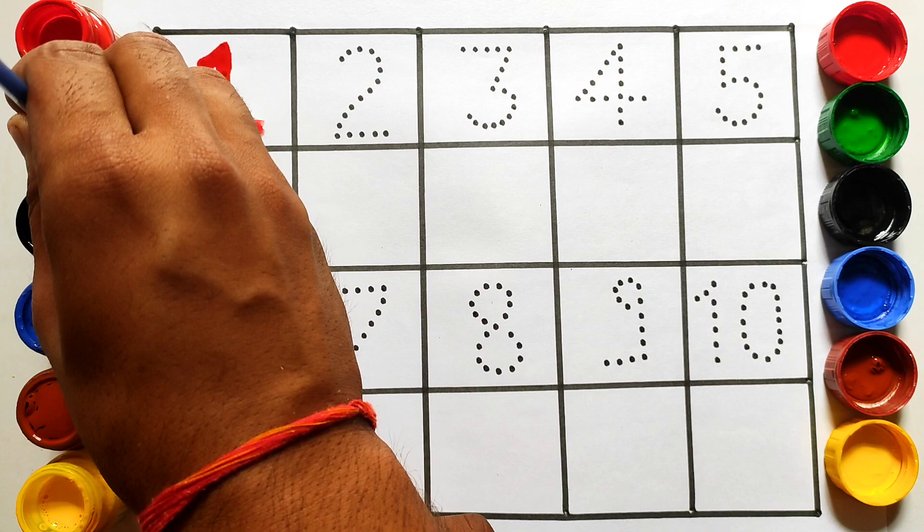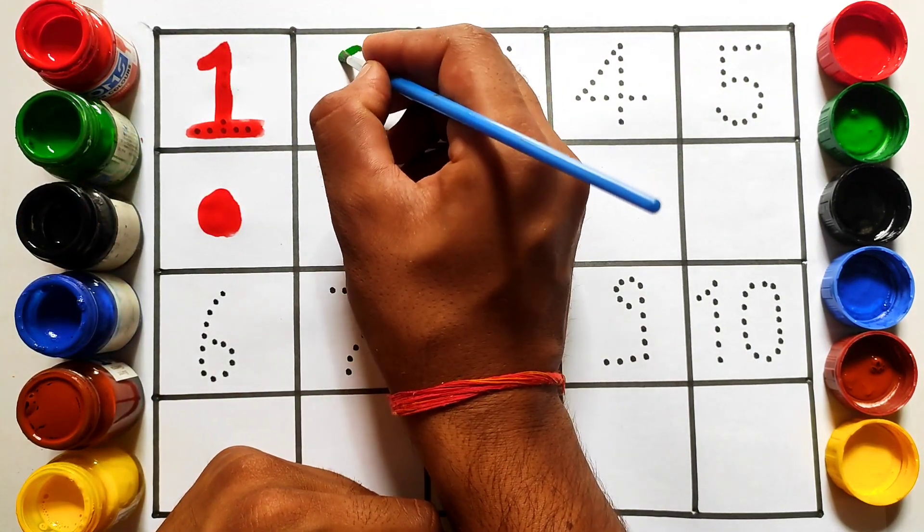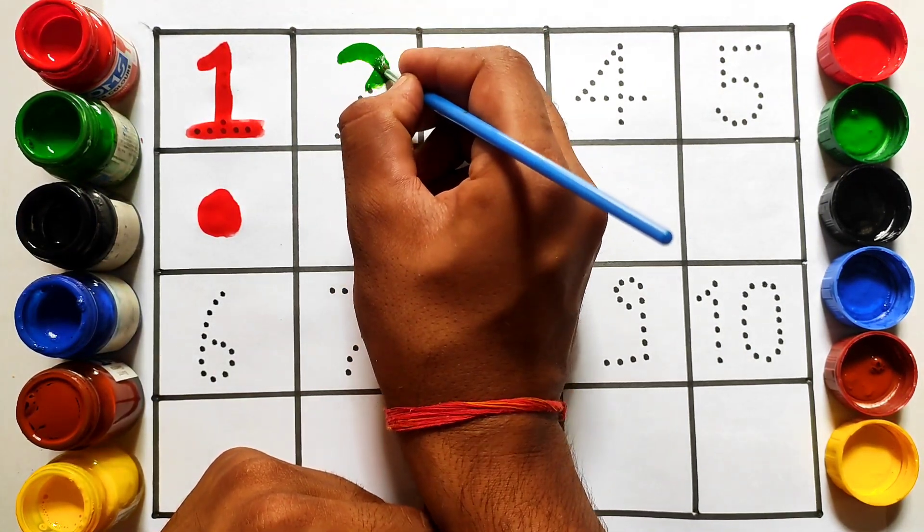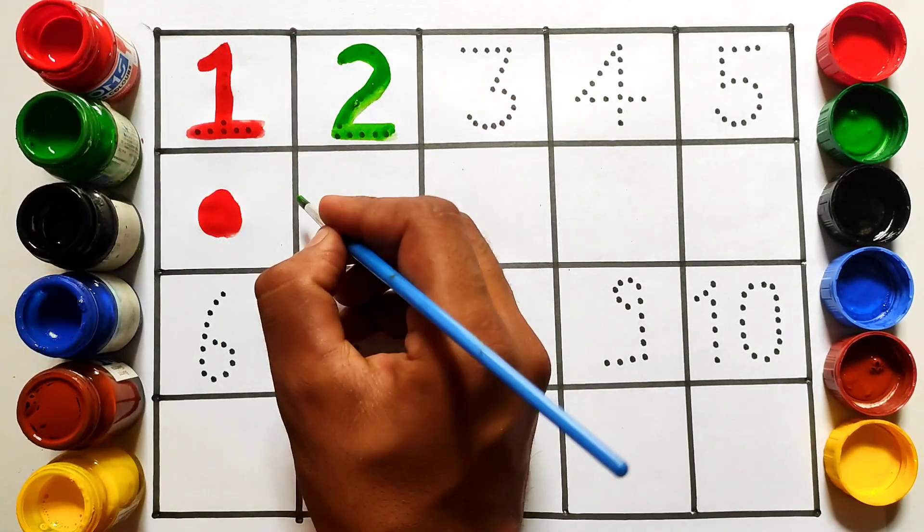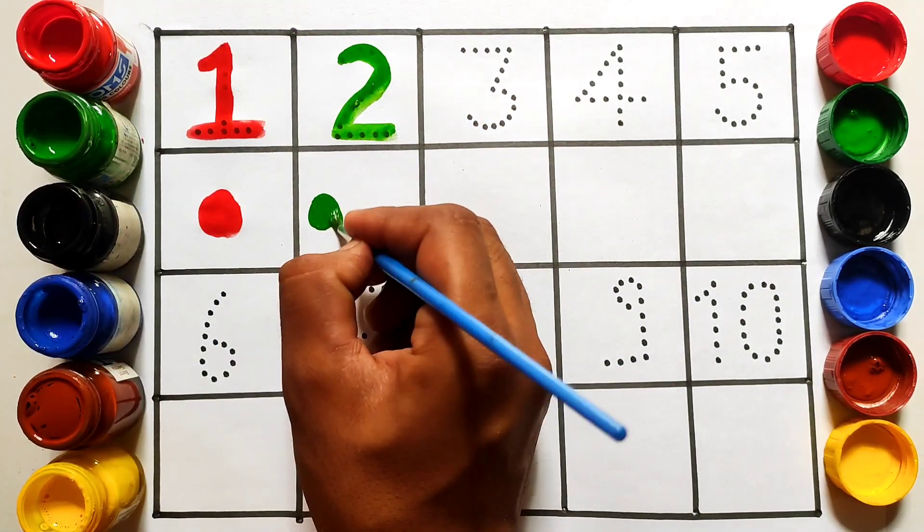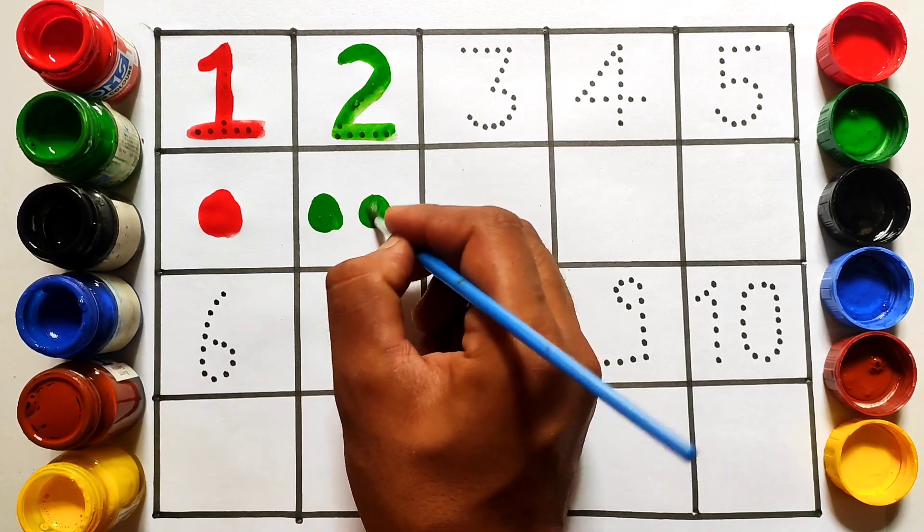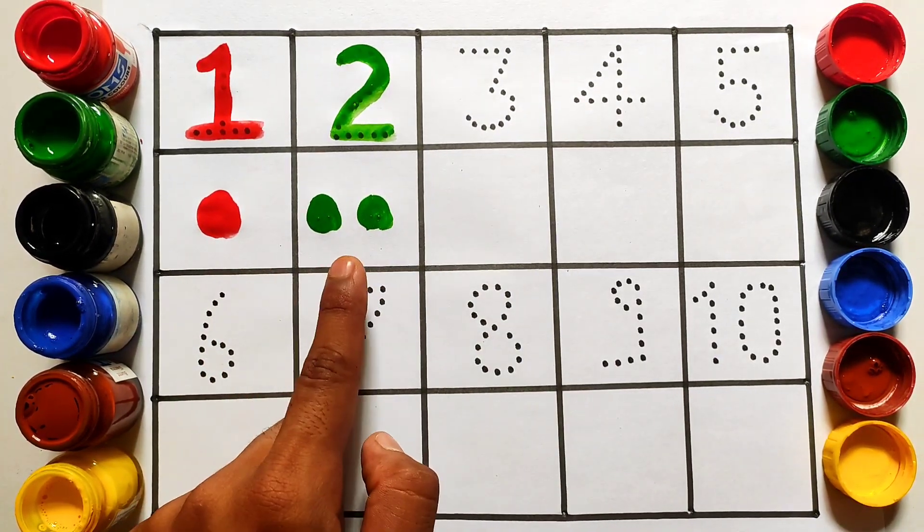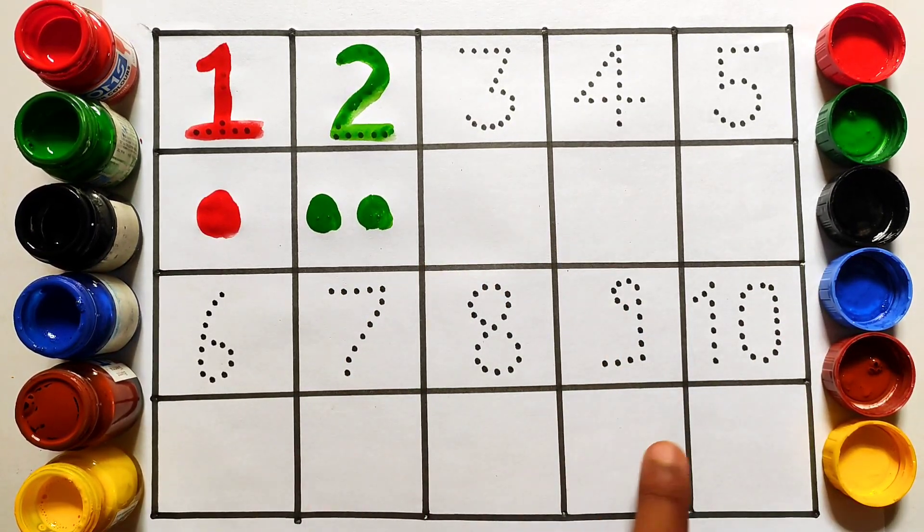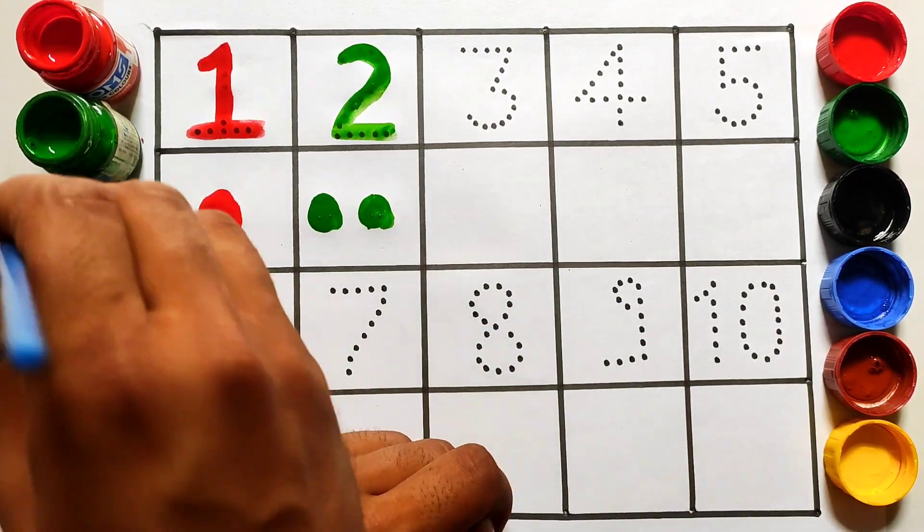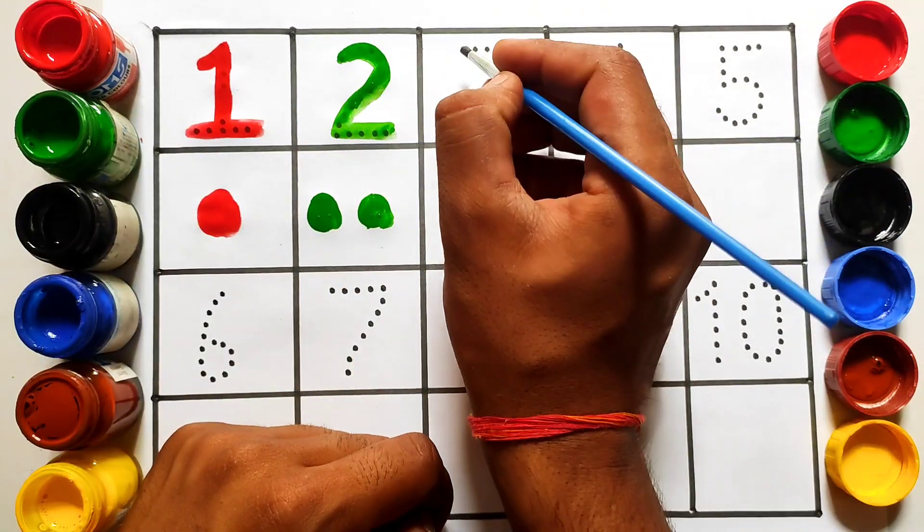Two, number two. One, two. One dot and two dots. So we are going to fill these boxes according to the numbers. Three.